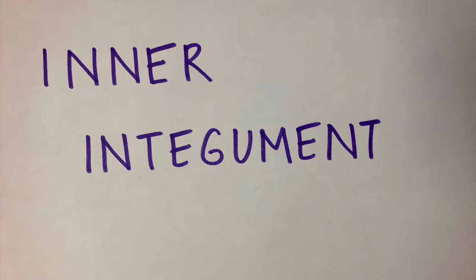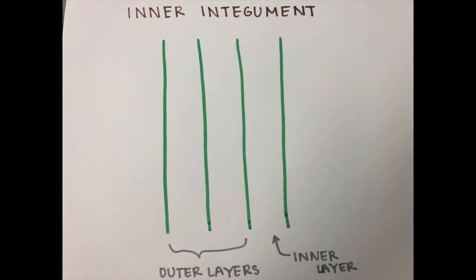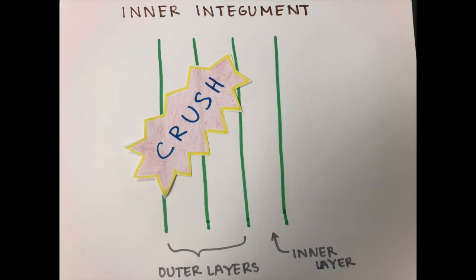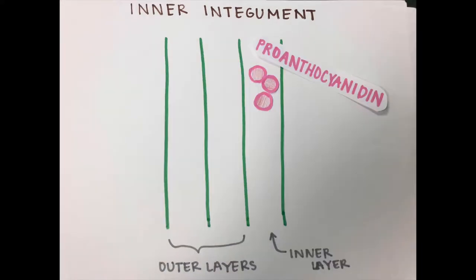Let's talk about the inner integument. There are two outer layers and one inner layer. The two outer layers get crushed together and do not differentiate. The inner layer, however, synthesizes proanthocyanidin, which oxidizes to form the brown coloring of the seed coat. In some species, the presence of proanthocyanidin has been associated with the resistance to pathogens and herbivores.